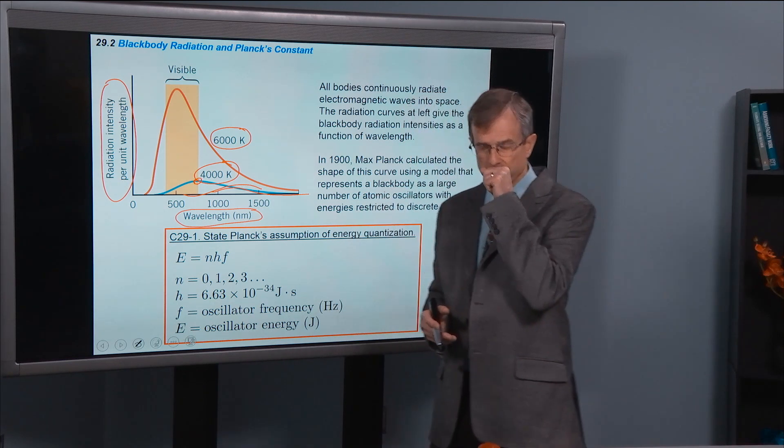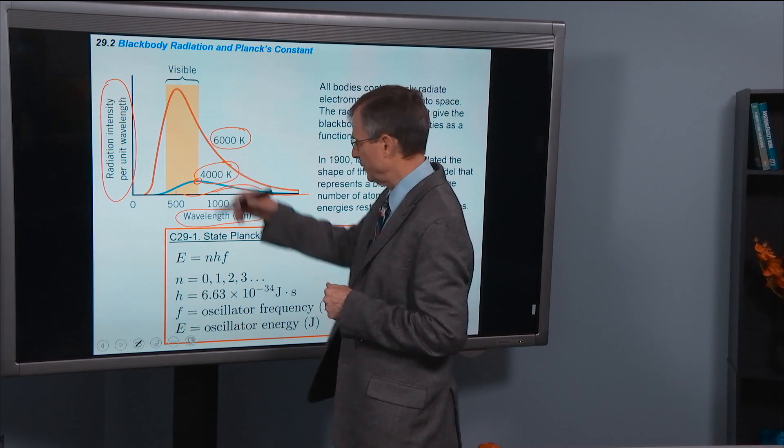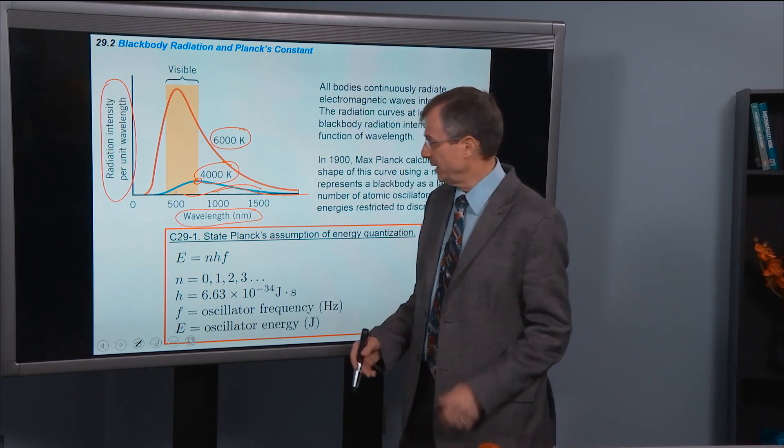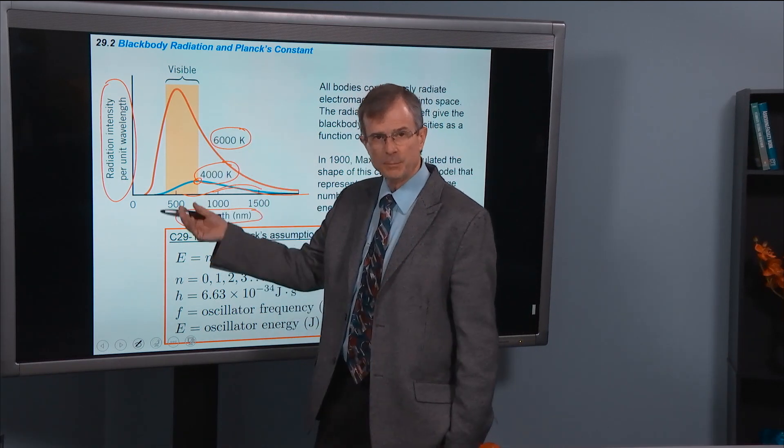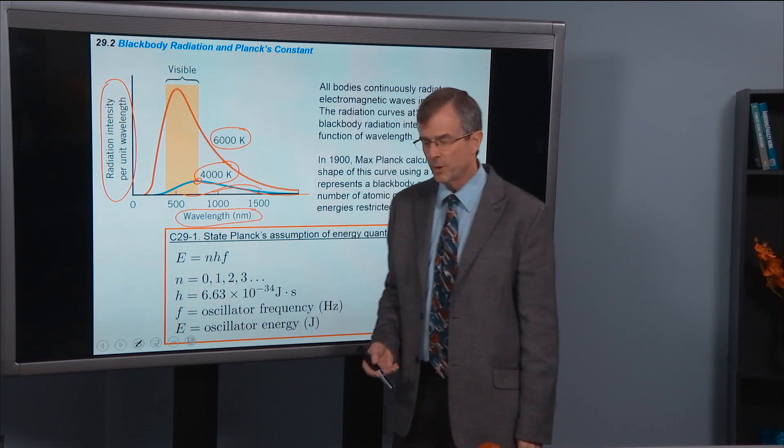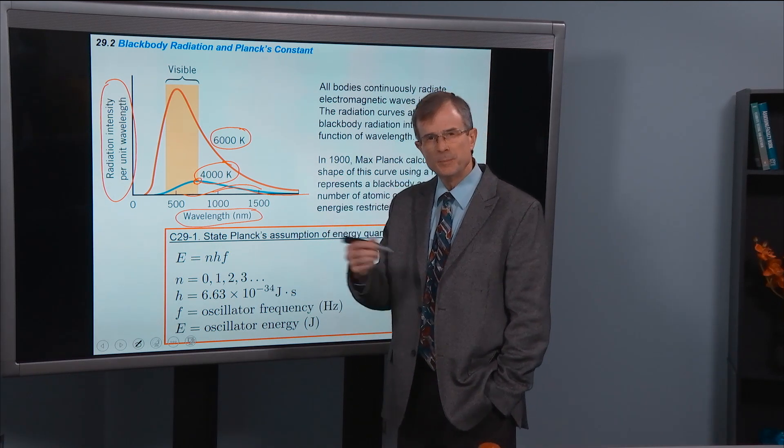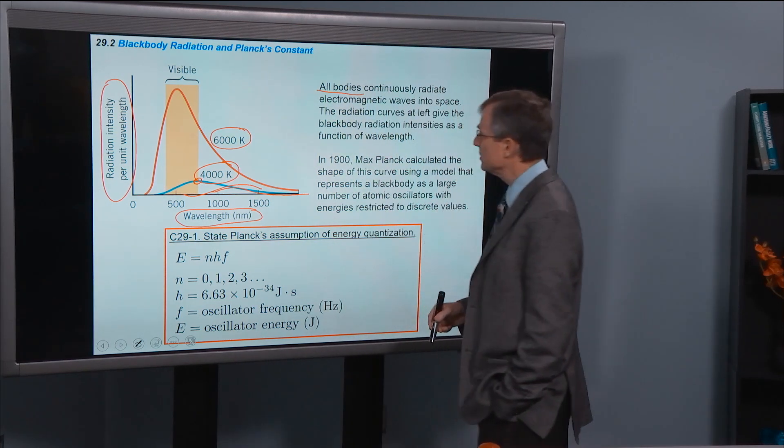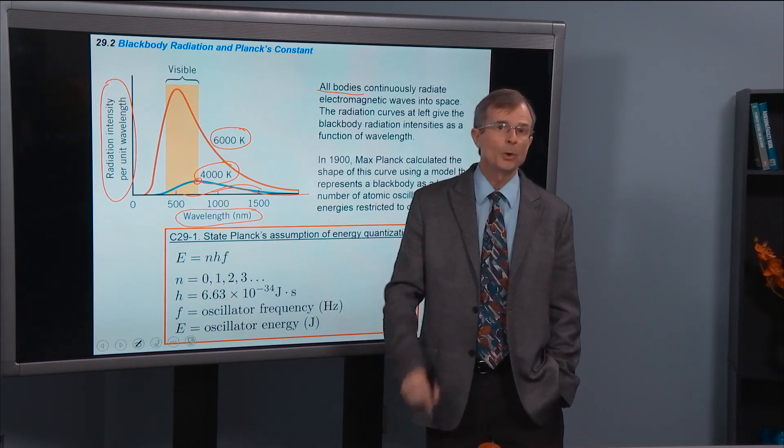An incandescent bulb, as was mentioned in the demo video, does, however, have a temperature that's in this range and emits some light in the visible range. Now, does a body have to be a perfect black body to emit radiation? And the answer is no. All bodies continuously radiate electromagnetic waves into space, including your body.